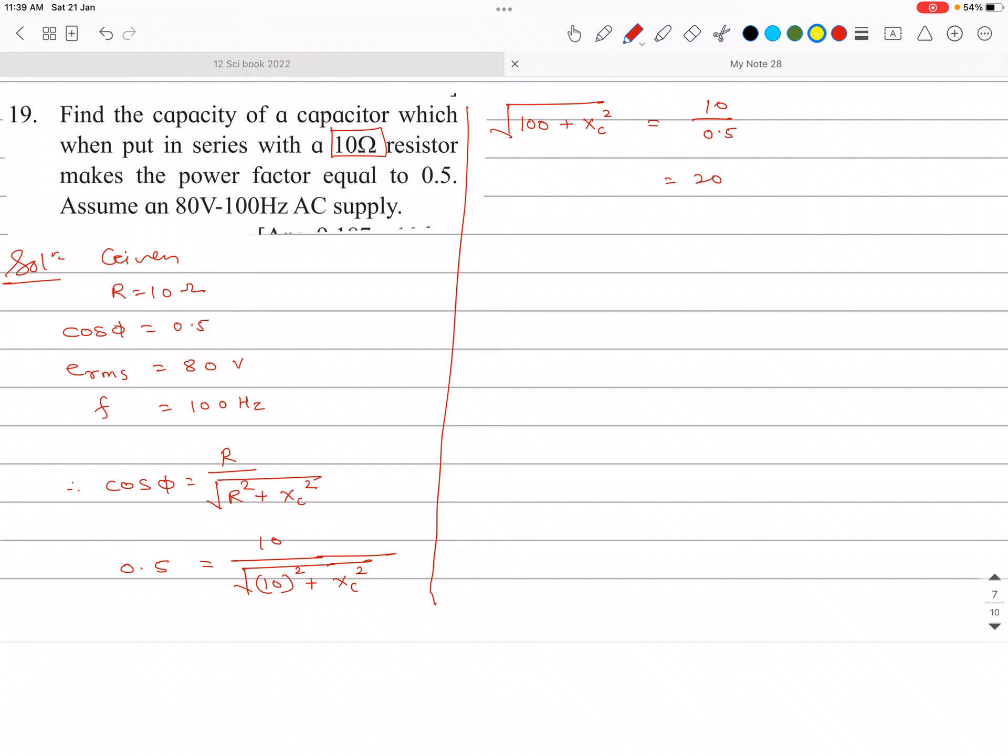So here 20 and this bracket as it is 100 plus XC bracket square. Squaring both sides we get 100 plus XC square is equal to 400.